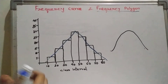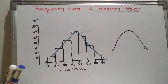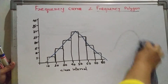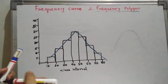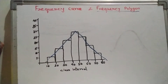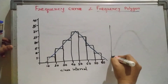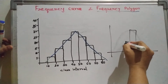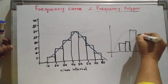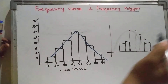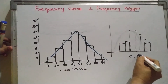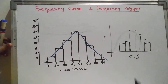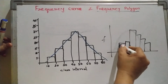So I hope the basic difference between the frequency curve and frequency polygon is clear. Now I want to explain one more topic — how to find mode graphically, that means with the help of the histogram. For that, first we draw a rough histogram. This is our class interval axis and here is the frequency. First we need to check where the highest frequency lies.